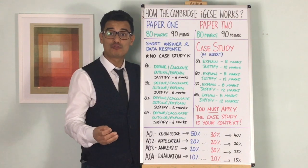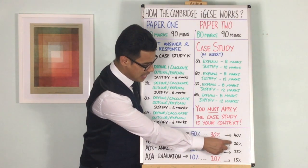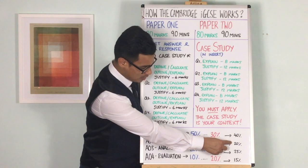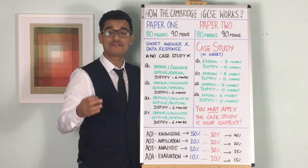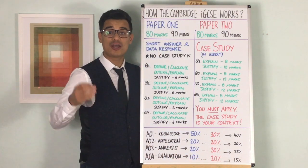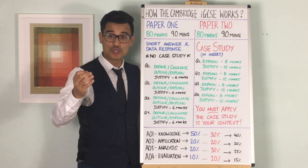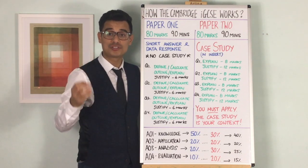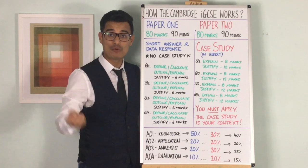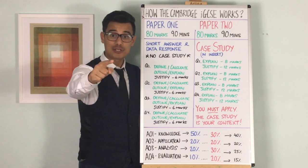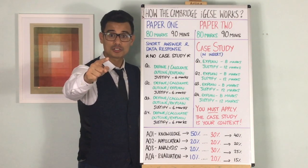In terms of the overall GCSE, AO1 is 40%, AO2 is 20%, AO3 is 25%, and AO4 is 15%. Make sure you check out all the content videos so you can get ready for your exam. Good luck, and make sure you like and subscribe — thank you very much.